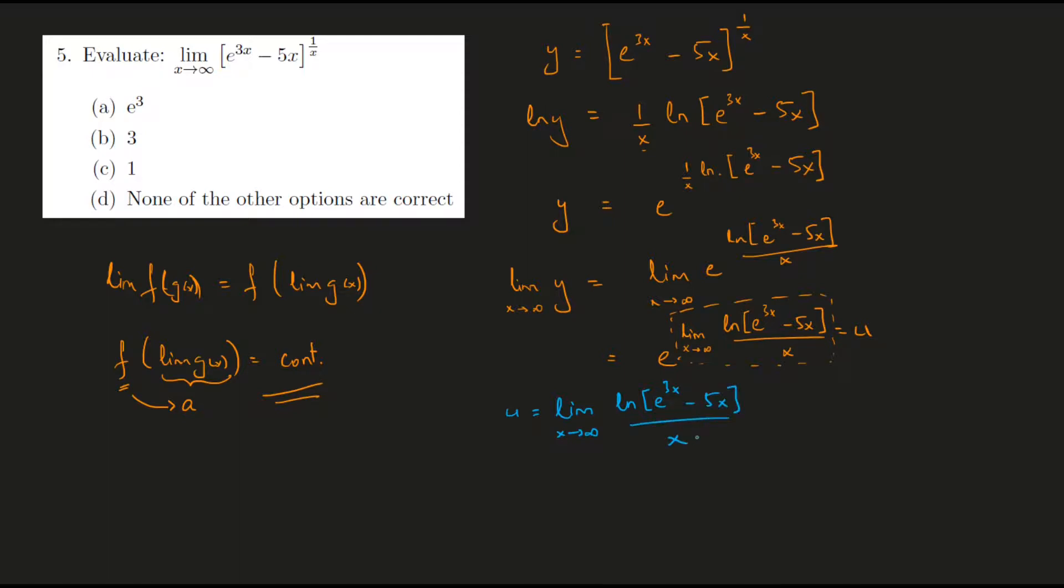E to the power of 3x minus 5x upon x. And if we try to substitute for x equal to infinity in this expression, we would observe that the denominator goes to infinity obviously.